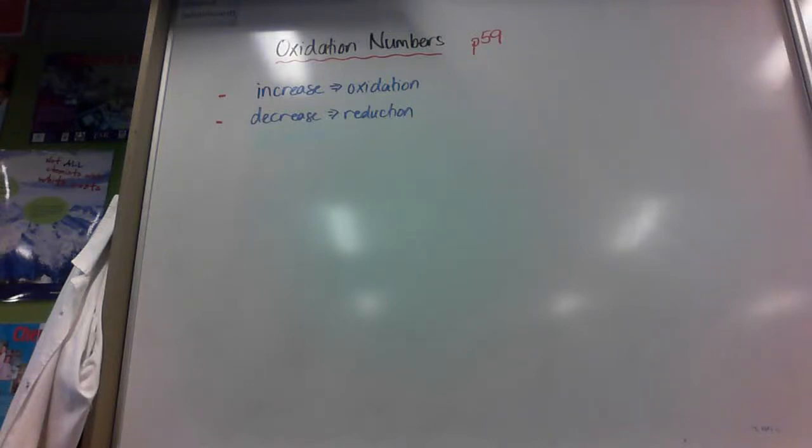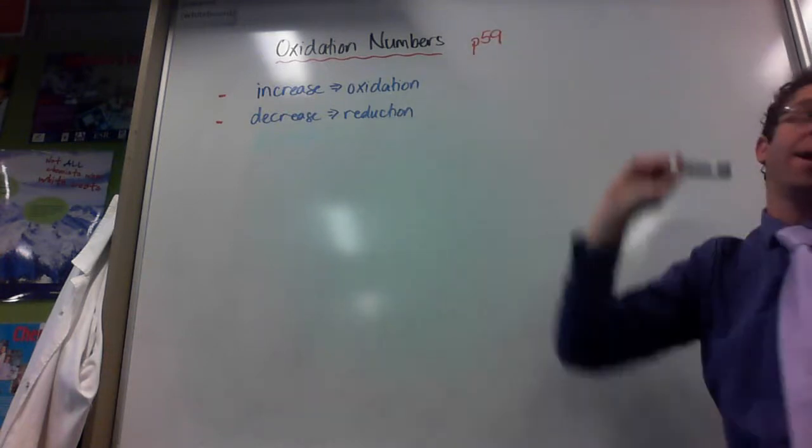So far we have looked at using electron transfer to decide if something is being oxidised or reduced. Another way that's really useful and actually quite quick is to look at its oxidation number. The book we use, Beginning Chemistry,